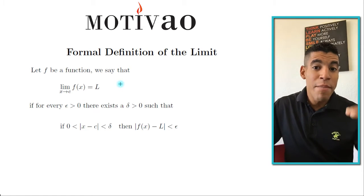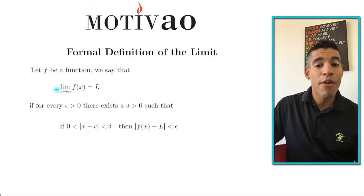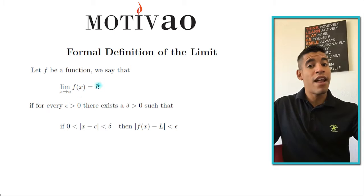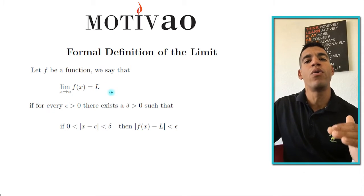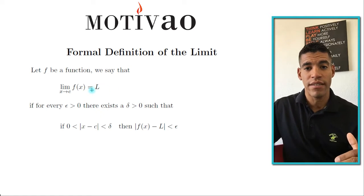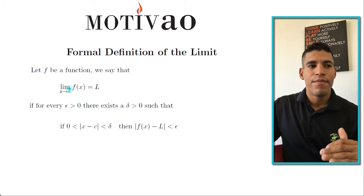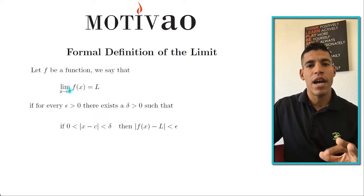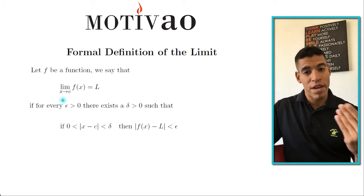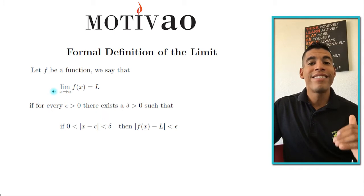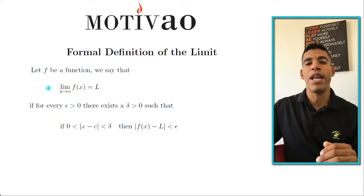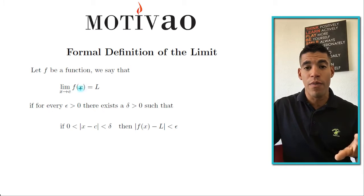Below 'lim' there is x, an arrow, and c. Notice that 'x → c' is not on top, not on the left, not on the right — it is strictly below those three letters 'lim,' and that's how you always write it. The arrow has a geometric meaning I'll discuss later, but for now read it as: 'the limit when x approaches c.'